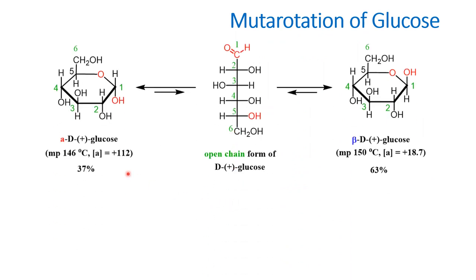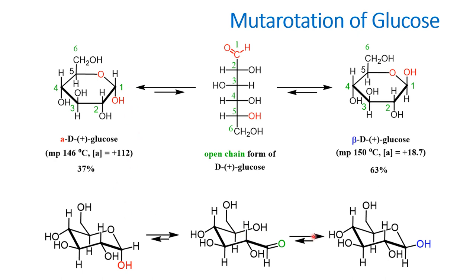Mutarotation in glucose: alpha D glucose has a specific rotation of +112°, and beta D glucose has a specific rotation of +18.7°. Both equilibrate to the open chain value of +52.7°. Since beta D glucose is the stabler form, at equilibrium the majority is in the beta form — 63% beta D glucose and 37% alpha D glucose. The Fischer projection, Haworth structure, and chair conformation can all be interconnected.